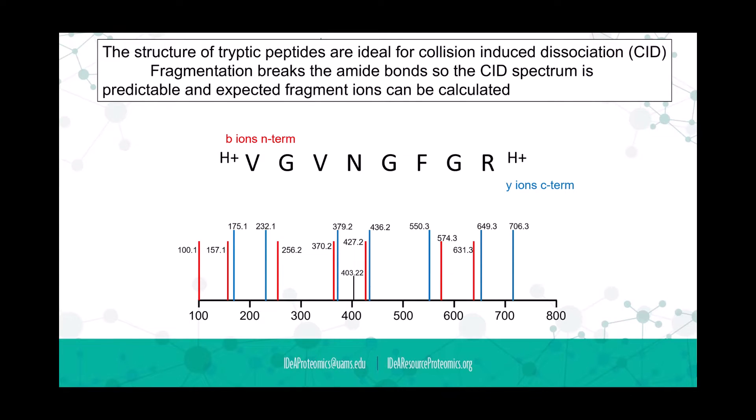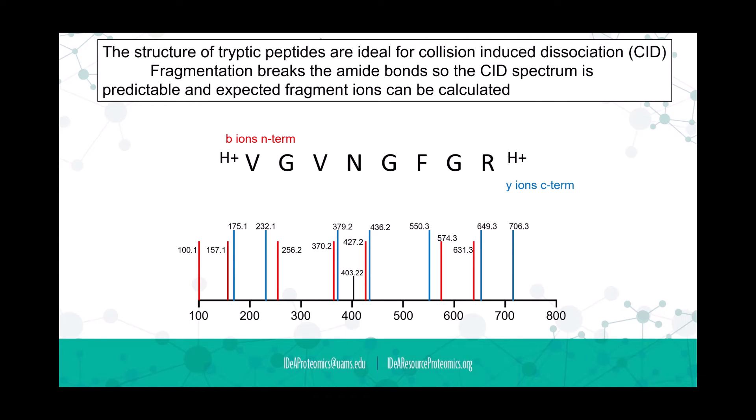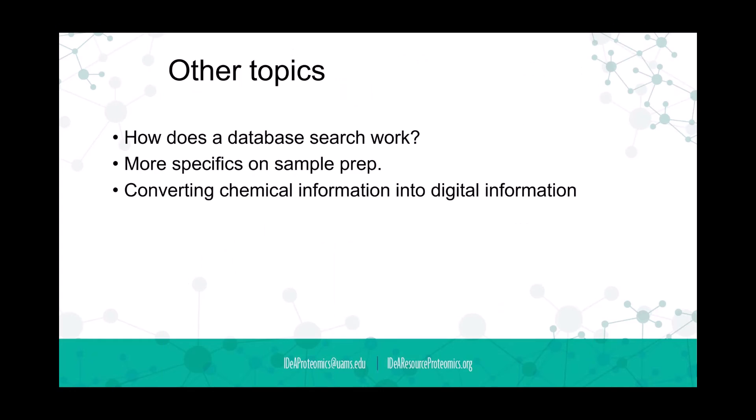This spectra right here represents the fingerprint of that peptide sequence. That information can be stored in a computer by the mass-to-charge of each one of these fragments as well as the relative intensities. Then it can look for that pattern, and every time it sees that pattern or something very similar, it can make a judgment as to whether it thinks it's that peptide or not.